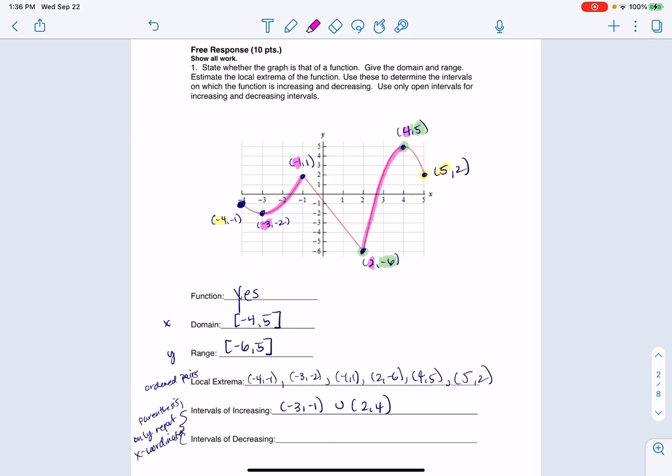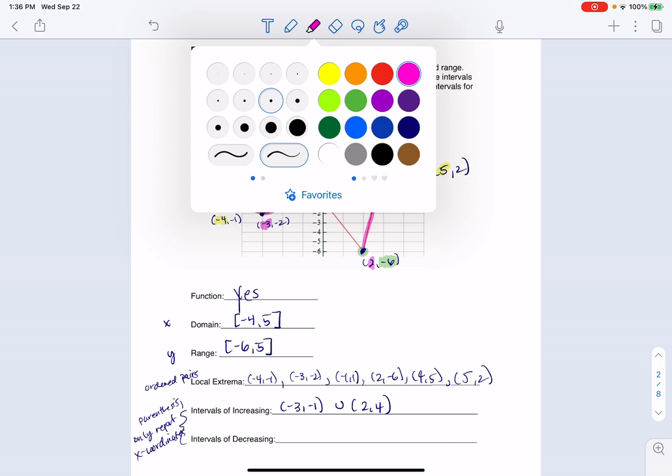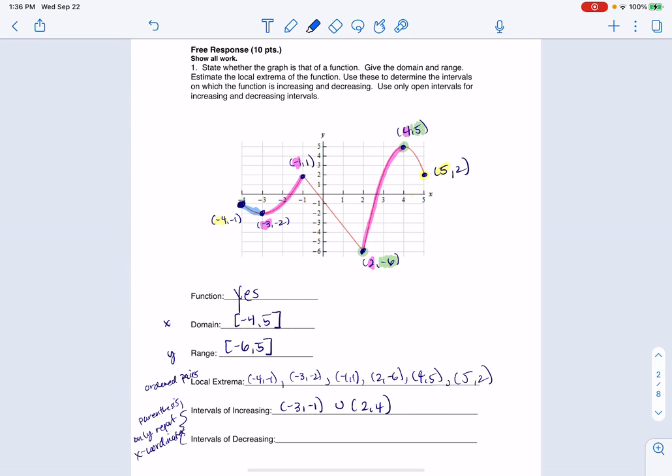Now let me change pen colors again. And let's look for decreasing. I'm decreasing here, here, and here as I move left to right. So let's go get those x coordinates. So that was from negative 4 to negative 3, and then negative 1 to 2. And then it looks like it is from 4 to 5. The first interval was negative 4 to negative 3. That next one went from negative 1 to 2, and that last one went from 4 to 5.